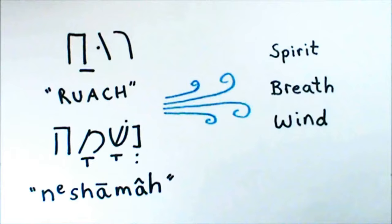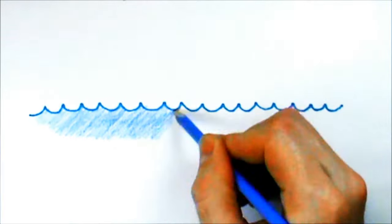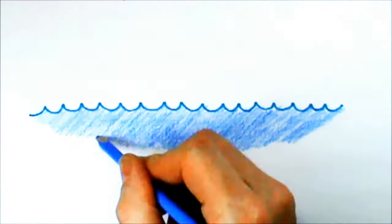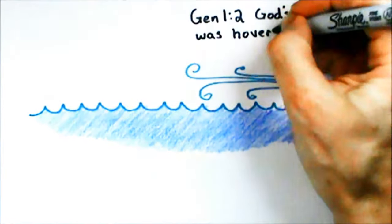Like in the creation story, it says that in the beginning God created the heavens and the earth, and then it says before anything came into existence, God's spirit, his ruach, was hovering over the water. And so the creation began.